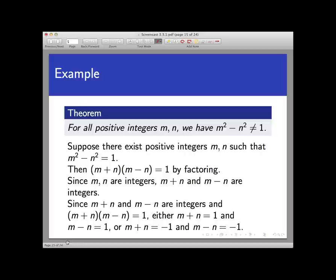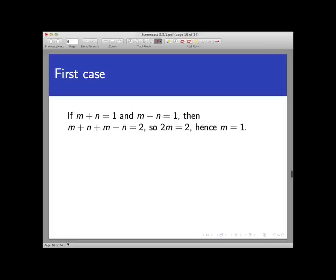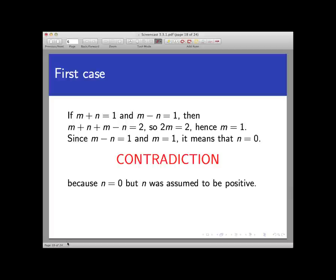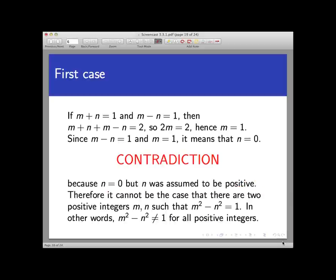Let's consider those two cases separately, watching where we end up through valid logical and mathematical steps. In the first case, if both m + n and m − n equal 1, we add those two equations to get 2m = 2, so m = 1. Since m − n = 1, it follows that n = 0. These are all valid mathematical steps. However, we've reached a contradiction: early in the proof we assumed that n is a positive integer, and now we're concluding that n = 0, which is not positive. Both of these statements cannot be true simultaneously, so we have a contradiction. We got here by assuming there existed positive integer solutions to that equation — the negation of the statement we wanted to prove. Since that assumption led to a contradiction, the negation must be false, and therefore the original statement must be true.